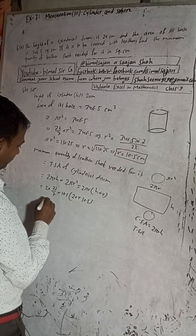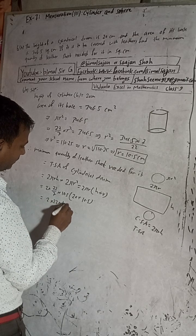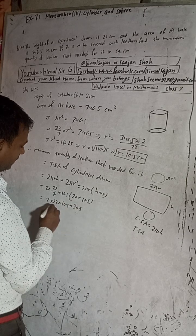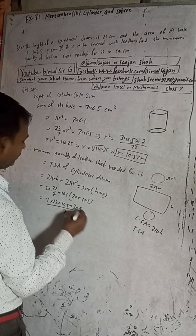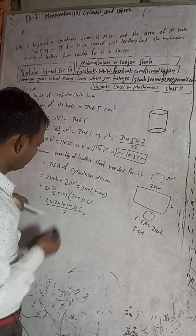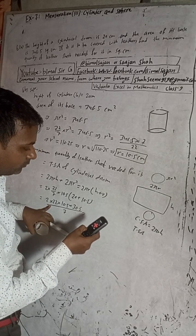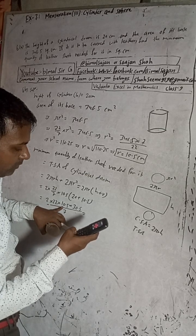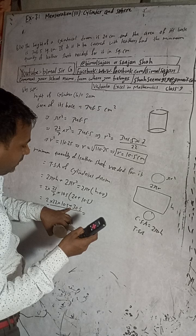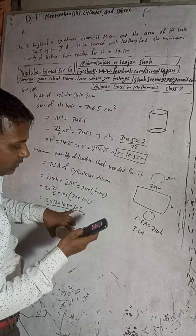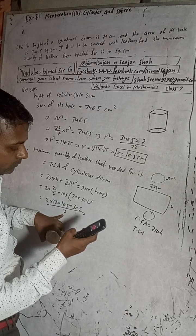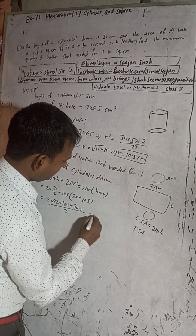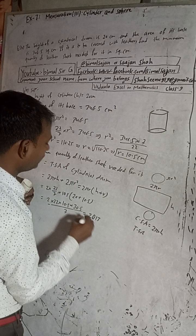So now, this will be 2 × 22 × 10.5 × (20 + 10.5) = 30.5, divided by 7. 2 × 10.5 × 30.5. This is the total surface area.